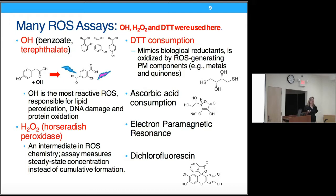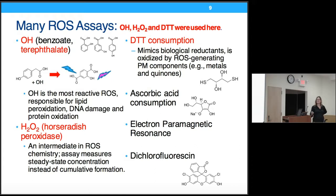Measuring exogenous ROS: there is a dizzying array of assays for measuring ROS formed by particles. Some assays were developed by biologists — including the dithiothreitol assay (DTT) and dichlorofluorescein — and have been adopted by atmospheric chemists. The state of understanding of what's really going on with these assays needs to be advanced.